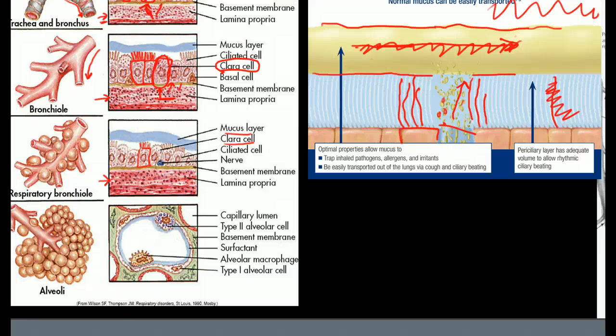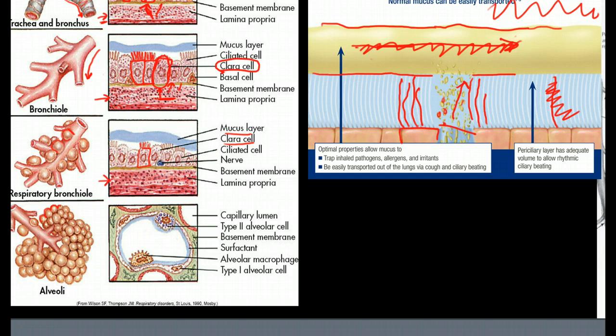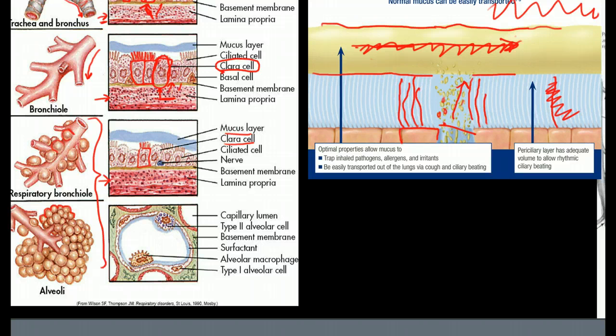We are down into the alveoli. You can see the respiratory bronchioles have these little out pouchings of alveoli in them. Then they end at a terminal bronchus, and there are these grape-like clusters of alveoli at the very end. Both of these are exchange airways. Everything above this is just a conducting airway.